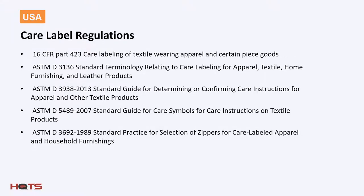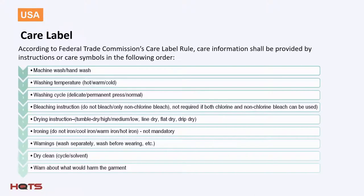The care label must contain user care information and instructions. It must be attached to the item in such a manner that it cannot become separated, and it must remain legible during the useful life of the product. The Federal Trade Commission mandates that care information shall be provided by text instructions or symbols or both, according to the ASTM D5489-96C standard. Whether words or symbols or both are used, they must appear in the following order: type of wash, water temperature, cycle recommendations, any bleaching instructions that apply, drying instructions, ironing, any warnings, dry cleaning, or warnings about anything that could cause damage to that particular item.